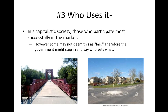The third question is for whom — who gets those goods and services? In a capitalistic society, those who participate most successfully in the market tend to get to use them — in other words, who makes the most money? Some may deem this as not fair, so the government sometimes has to step in and say who gets what. Who gets this bridge, the Monon Trail? Who gets a roundabout at Fairview and Morgantown? Those are decisions the government makes for hopefully the good of the people.